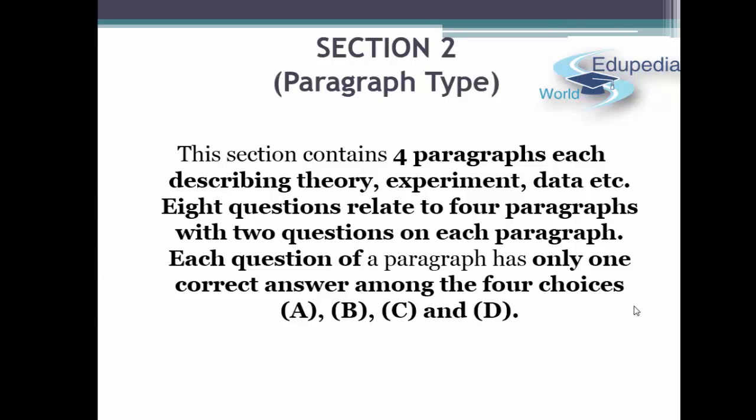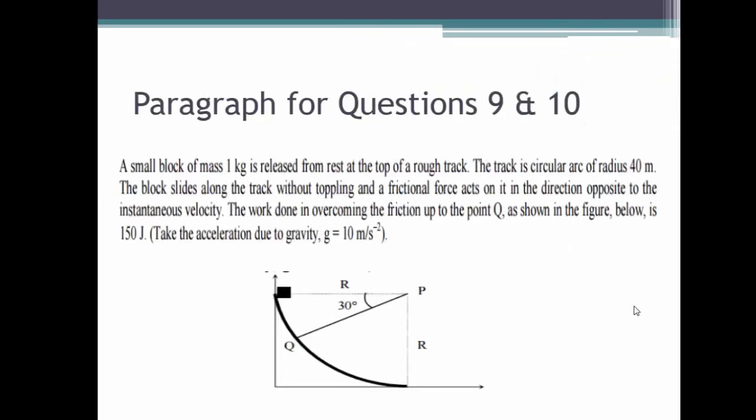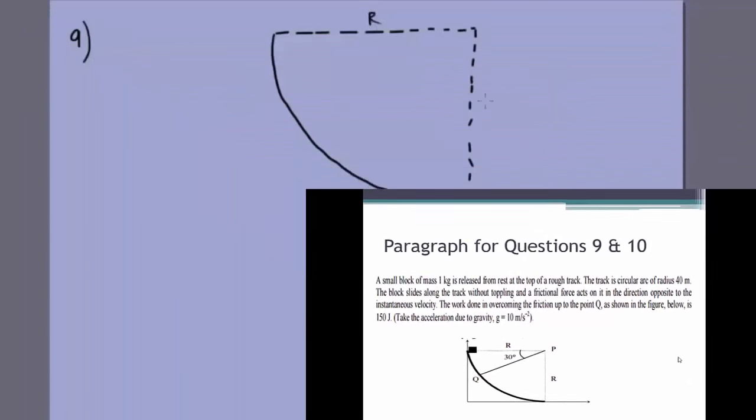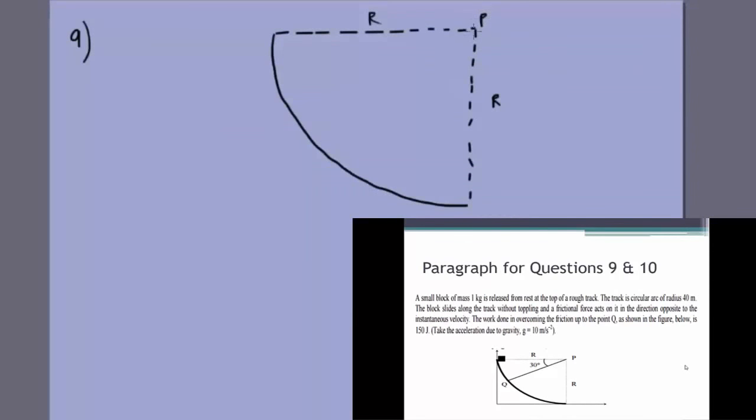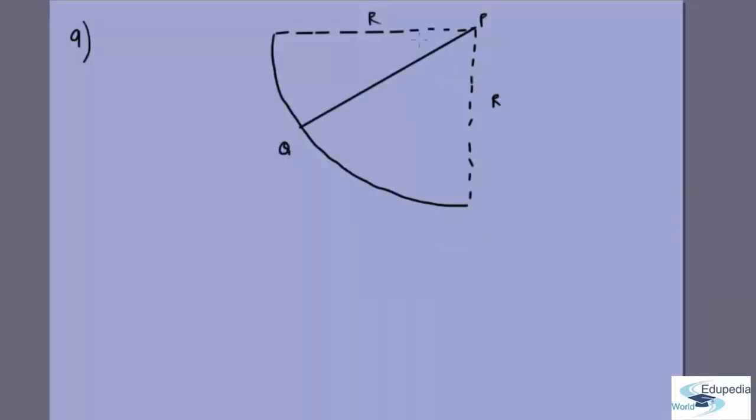We have a circular arc of radius R. This is point P and this is point Q at 30 degrees. We release a block here and we've drawn the axis in this case which makes things simpler. This is the x-axis and this is the y-axis.